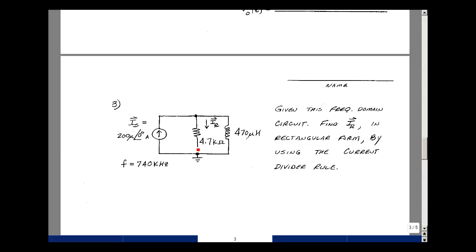Problem number three is given an RL circuit in the frequency domain, can you find the current and the resistance in rectangular form? I'd like you to use the current divider to do that.